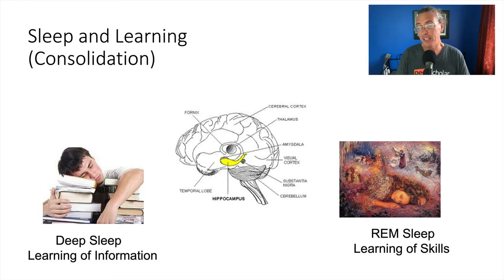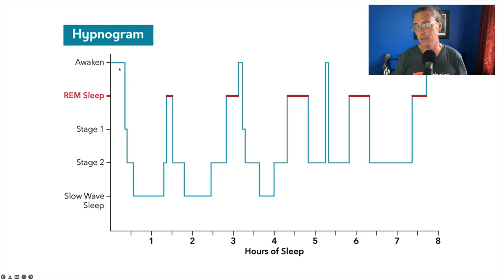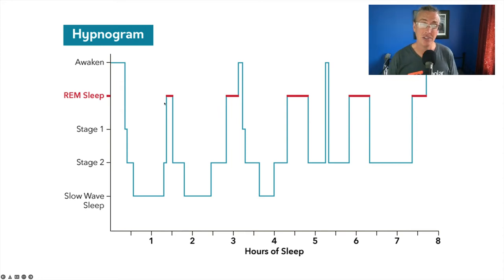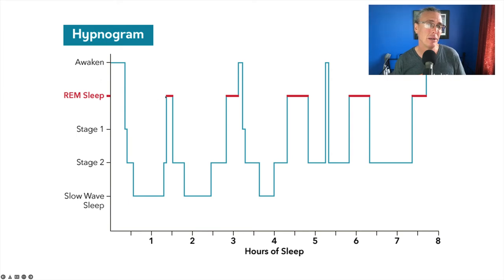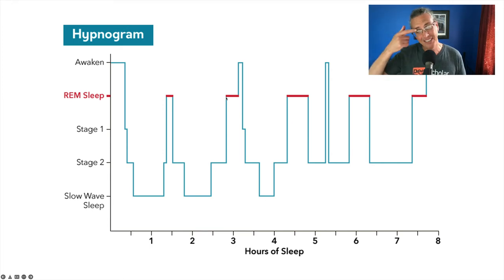What about REM sleep and dreams? You can study this by using an EEG to track sleep stages, then waking someone up every time they enter REM sleep. Every time they're about to dream, you wake them up and let them go back to sleep. This way, they can get a full eight hours of sleep with no dreaming at all — you've removed the dream part from sleep.